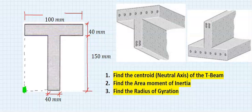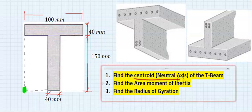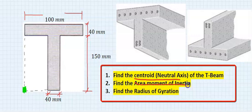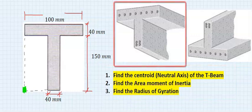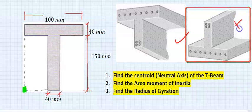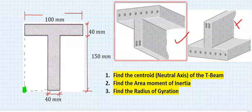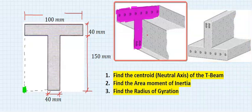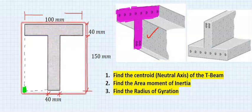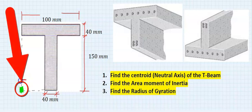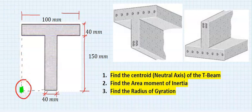In this problem we are to find the centroid and area moments of inertia, then afterwards the radius of gyration. This is the T-beam — specifically a flipped T-beam. We are considering a cross-section of this T-beam, and this is the reference point for all calculations.